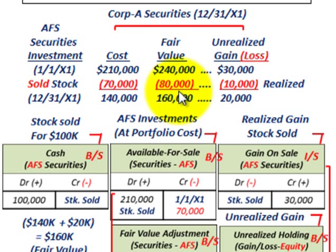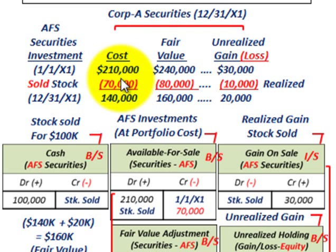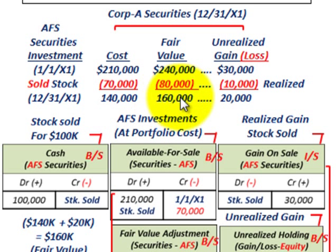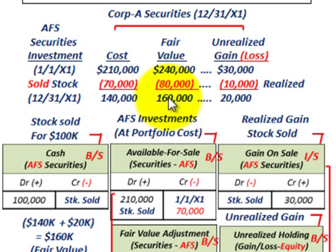At the end of the year, we subtract out the stock we sold from our beginning cost of $210,000, giving us an ending cost of $140,000. The remaining fair value is $160,000. Comparing cost versus fair value, we would have an unrealized gain of $20,000 at year end, because our fair value of $160,000 is greater than our cost of $140,000.